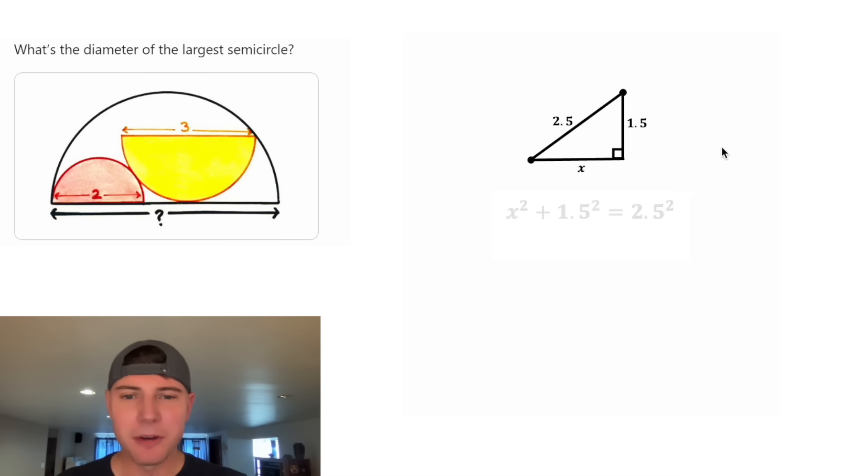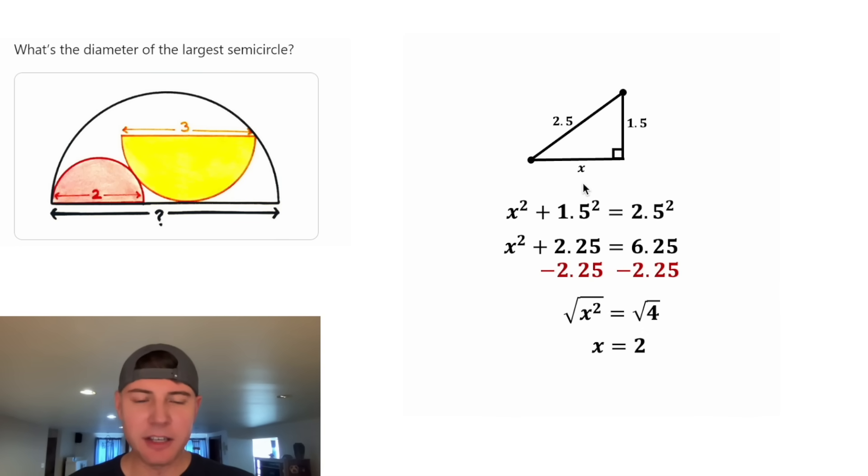Now we're ready for Pythagorean theorem. We know that x squared plus 1.5 squared is going to be 2.5 squared. We can bring down the x squared. 1.5 squared is 2.25, and 2.5 squared is 6.25. After we subtract 2.25 from both sides, we get x squared is equal to 4. And then we can square root both sides, and we get x is equal to 2.